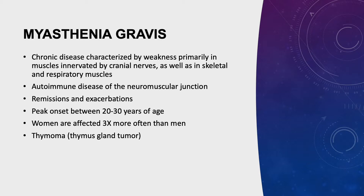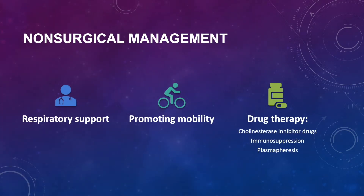You should know that MG is an autoimmune disease of the neuromuscular junction, that it has remissions and exacerbations, that its peak onset is between 20 and 30 years of age, and that women are affected three times more often than men. It is often caused by something called a thymoma, which is a thymus gland tumor. These symptoms may affect facial expression, chewing, and speech. In addition, there is proximal limb weakness — that is, weakness of the shoulders, flexors of the neck, and the hip flexors. In advanced cases, all muscles are weakened, including respiratory and bowel and bladder function. Therefore, it is imperative that the nurse provide respiratory support, promote mobility, and offer drug therapy including cholinesterase inhibitor drugs, immunosuppression, and plasmapheresis.